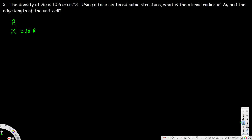Here they have provided the density: density equals 10.6 grams per centimeter cube. Density is equal to mass divided by volume. What we can do is find the volume first, and then find x, because when we deal with a face-centered cubic structure we are dealing with a cube. Volume equals edge length cubed, so volume equals x³. If we solve for volume, it's easy to find the x value.